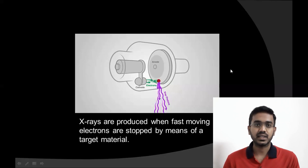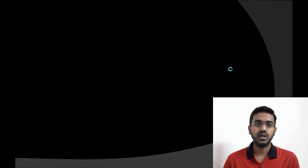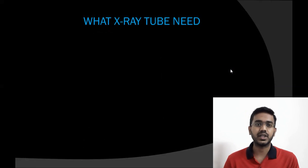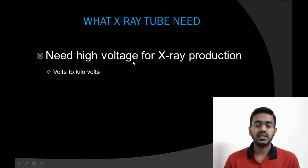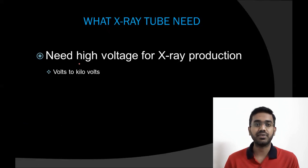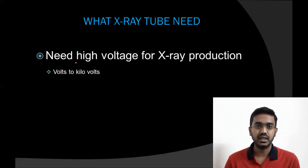Next, let us discuss the components in the X-ray tube. The X-ray tube needs high voltage for X-ray production. Why do we need high voltage? As mentioned in the X-ray production principle, we need fast-moving electrons to generate X-rays. In order to accelerate the electron faster, we need to provide high potential, i.e., high voltage.